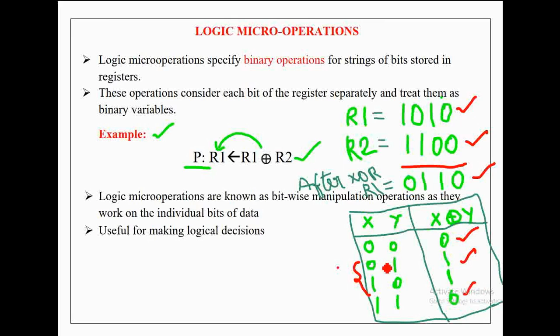So according to this XOR truth table, the output is generated by performing XOR operation on each pair of bits in R1 and R2.